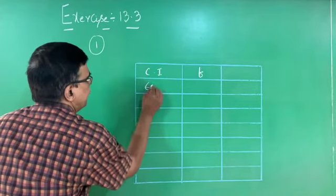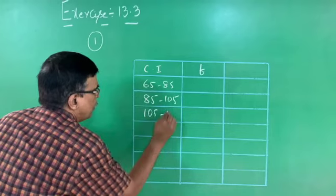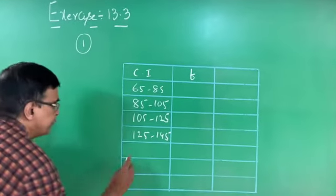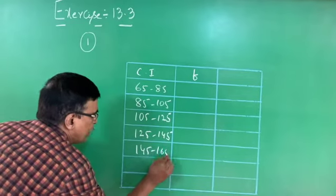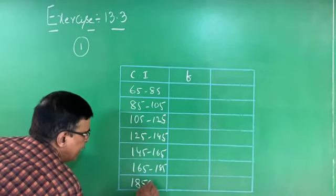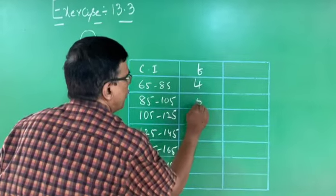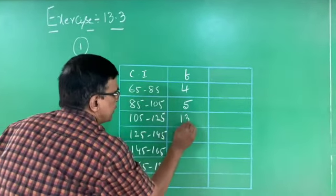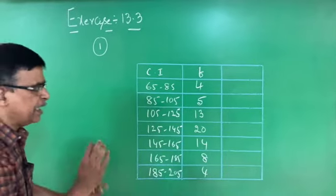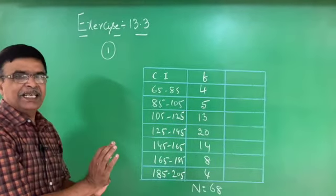The class intervals are 65–85, 85–105, 105–125, 125–145, 145–165, 165–185, and 185–205. The corresponding frequencies are 4, 5, 13, 20, 14, 8, and 4. It is already given that N equals 68, meaning there are 68 consumers who consume electricity.